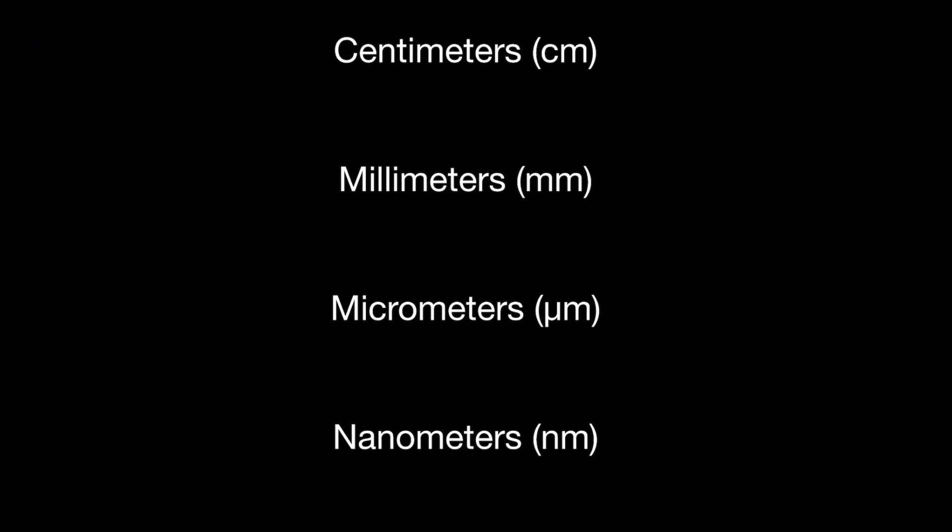Starting with centimeters: if your ruler is measuring in centimeters and you want to convert to millimeters, there are 10 millimeters in every centimeter, so multiply by 10. Since there are 100 centimeters in a meter and 10 millimeters in every centimeter, there are 1000 millimeters in a meter. A millimeter is represented in scientific notation as 10 to the power of minus 3 — that is one thousandth of a meter.